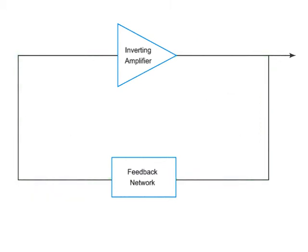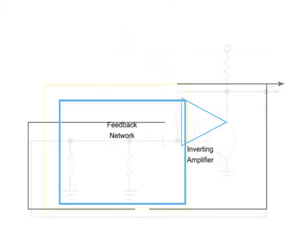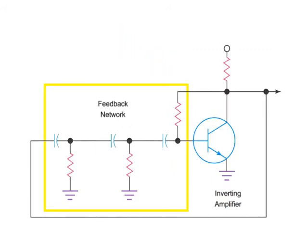Feedback networks can function in a variety of ways. In this oscillator example, a phase shift network is employed. This feedback network uses a series of capacitors and resistors to shift the signal's phase by 180 degrees as the signal passes through the network.